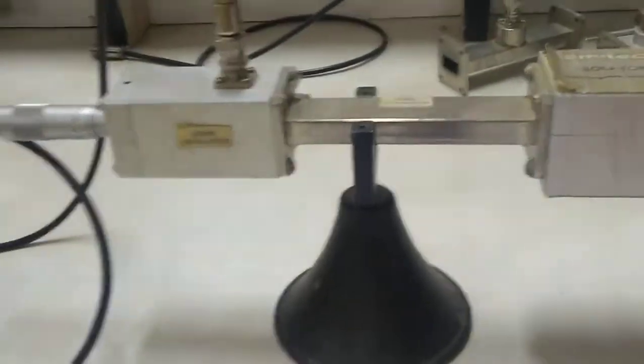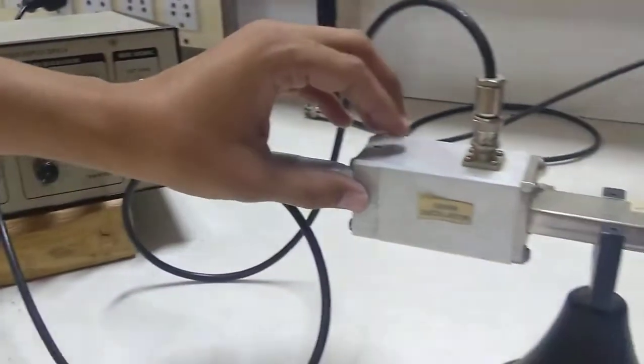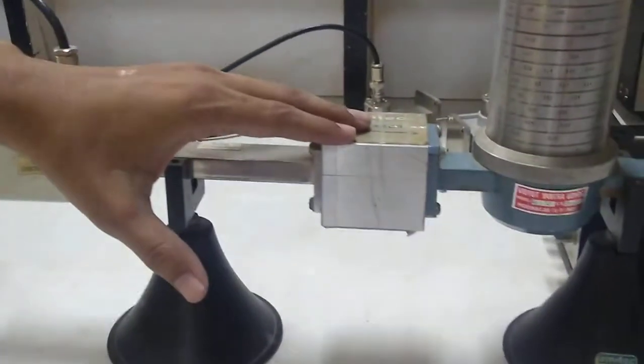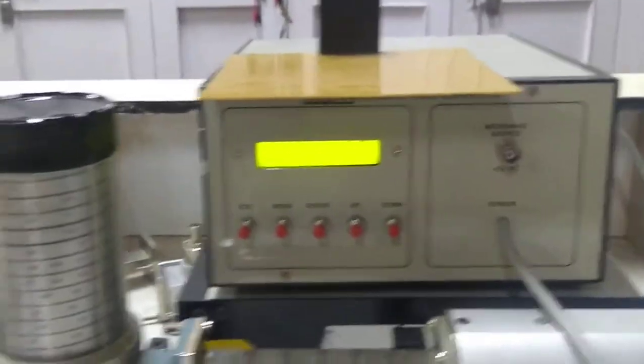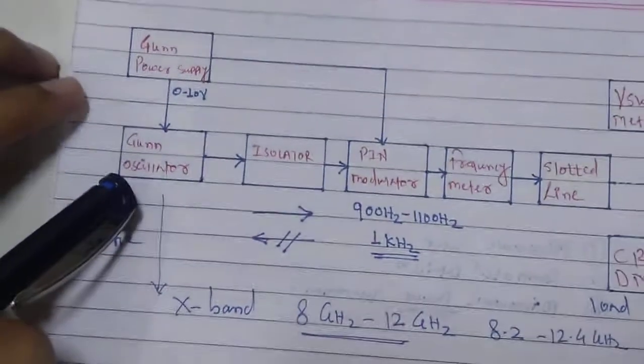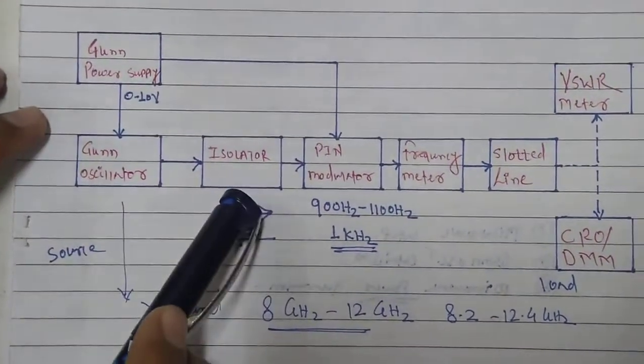The setup for this experiment consists of a gun power supply, gun oscillator, isolator, frequency meter, and power meter. You can see the block diagram — we have gun oscillator, power supply, and isolator.